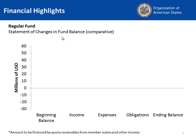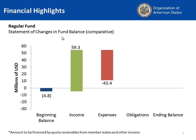Here's how I redid it. We take a look at the balance in this fund: we start the year with a $4.8 million deficit. Our income is going to be $59.3 million, so that gets us above. But our expenses are $43.4 million, and we also have obligations of $33.8 million, which leaves our fund at the end at a deficit position of $22.7 million. This is a waterfall graph — a very effective way to show the components of a change between a starting and an ending amount or balance.